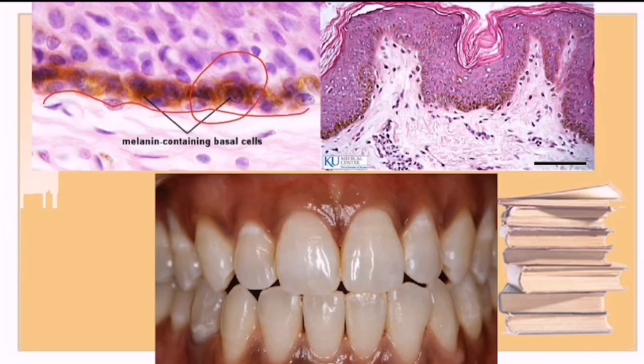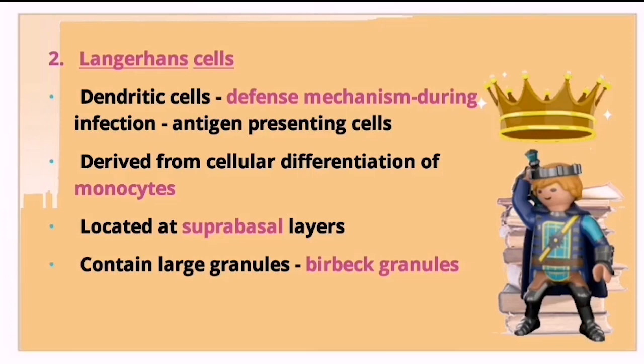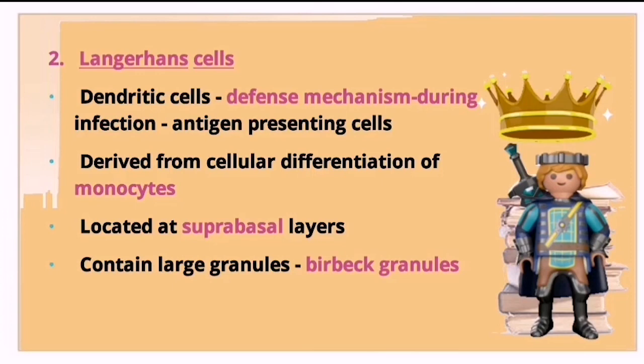In this picture, you can see melanocytes located in the basal cell layer. The clinical picture demonstrates melanin pigmentation on the gingiva, which these cells are responsible for producing.